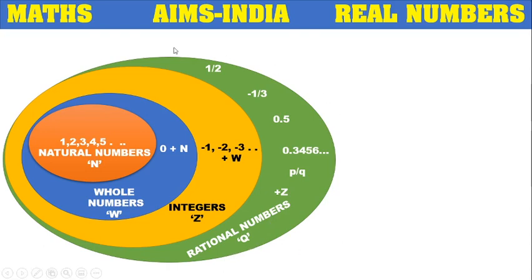Now we have got almost all types of normal numbers. Natural numbers, then 0 is added giving whole numbers, then negative numbers are added giving integers, then fractions and decimal numbers are added giving rational numbers. So rational numbers form one set consisting of natural numbers, whole numbers, and integers.